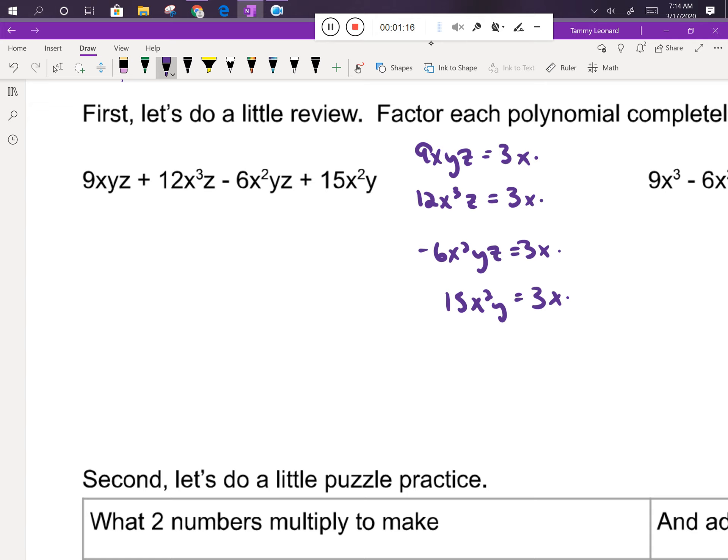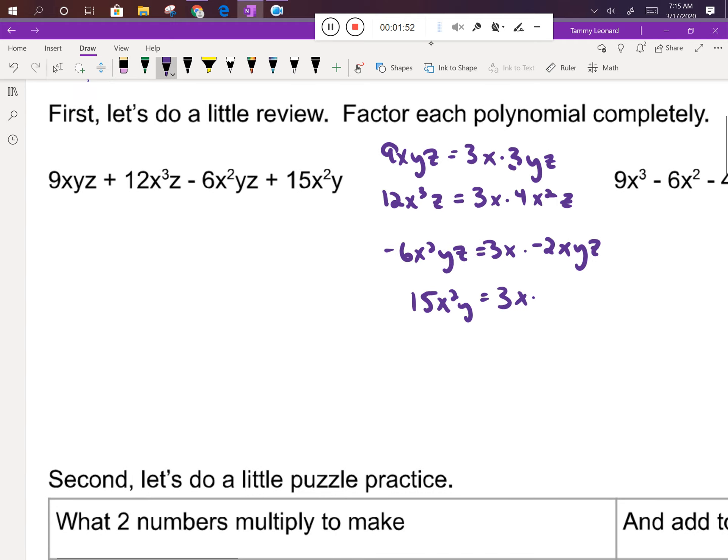Now we go back to each term, and we say okay, I need 9xyz, and I've got 3x so far, so I'm going to need a 3 to get back to 9, a y, and a z. In the next one, I've got 3x and I need to have 12x³z, so I'm going to need a 4, an x², and a z. I've got 3x and I need to get back to -6x²yz, so I'm going to need a -2, another x, a y, and a z. I've got 3x and I want to get back to 15x²y, so I'm going to need a 5, an x, and a y.